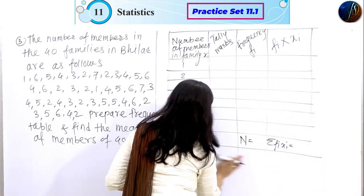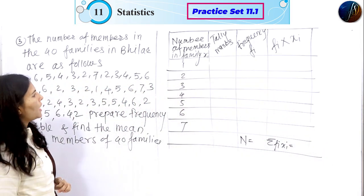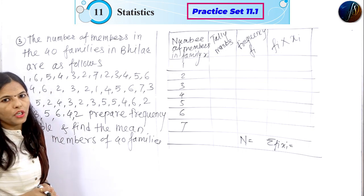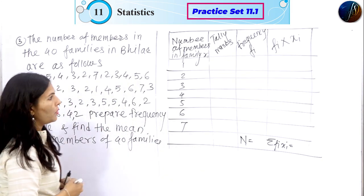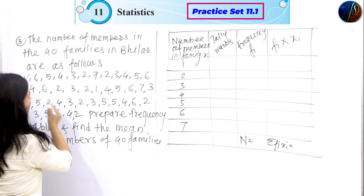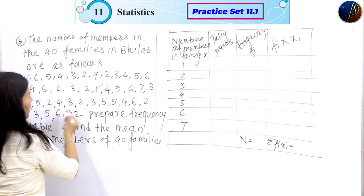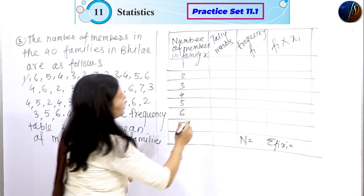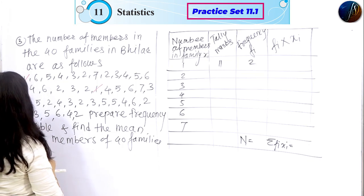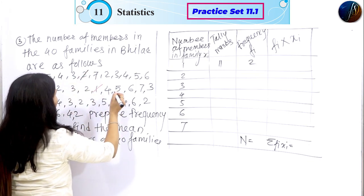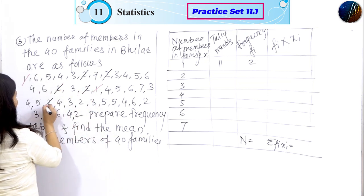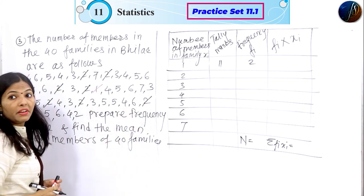If you are confused, here is how we do this. For xi = 1, we count: one. For xi = 2, we count: one, two — two times. So we have frequency 2 for xi = 2. We continue counting: three, four, five, six, seven. Seven times two. We carefully go through each value.